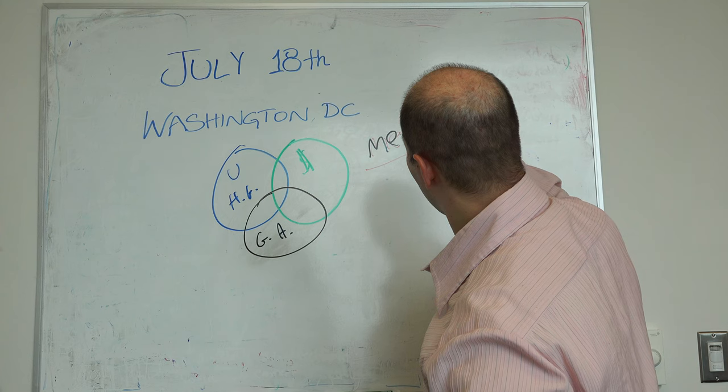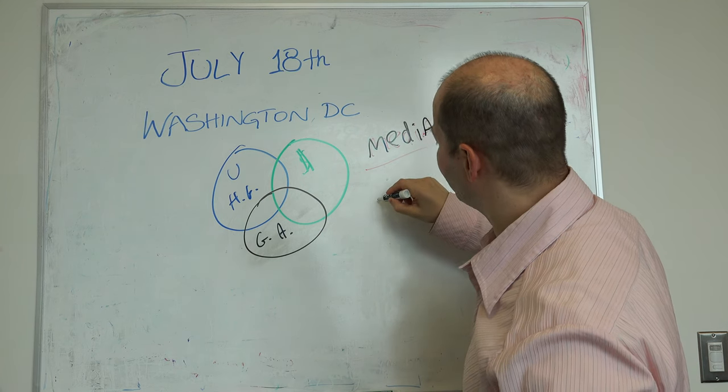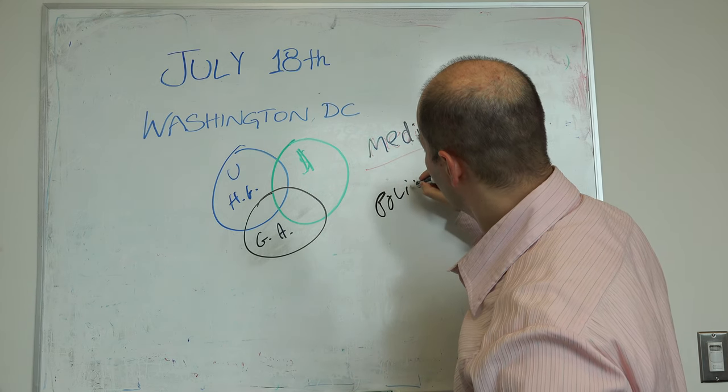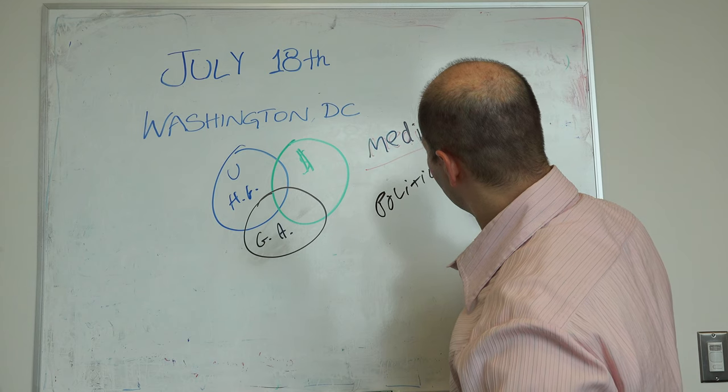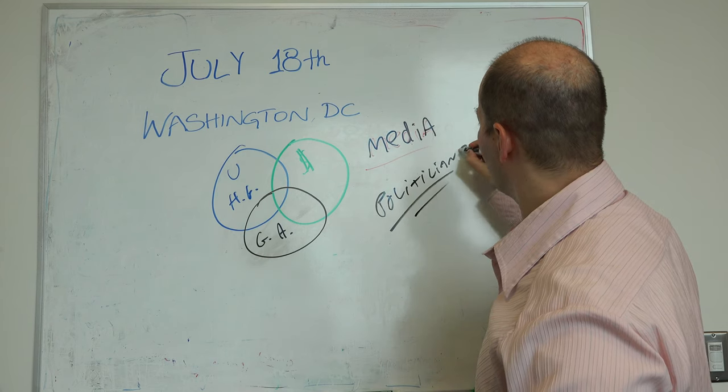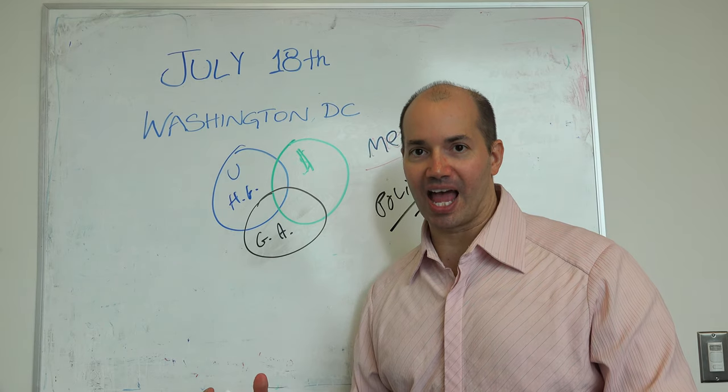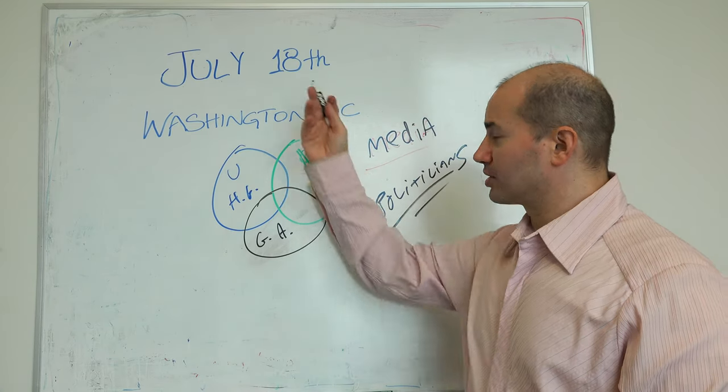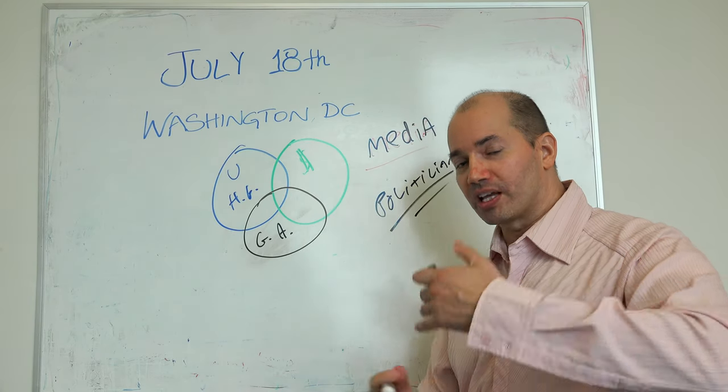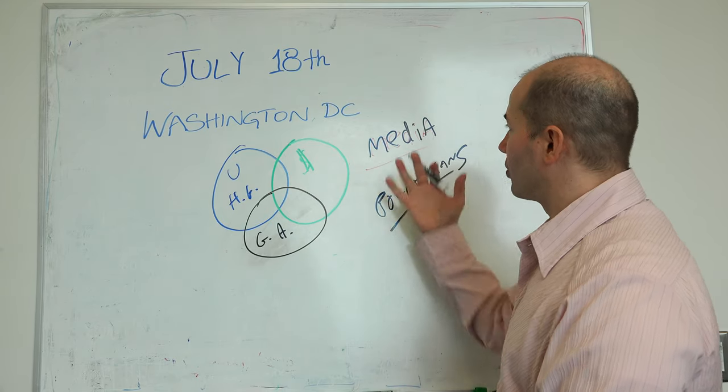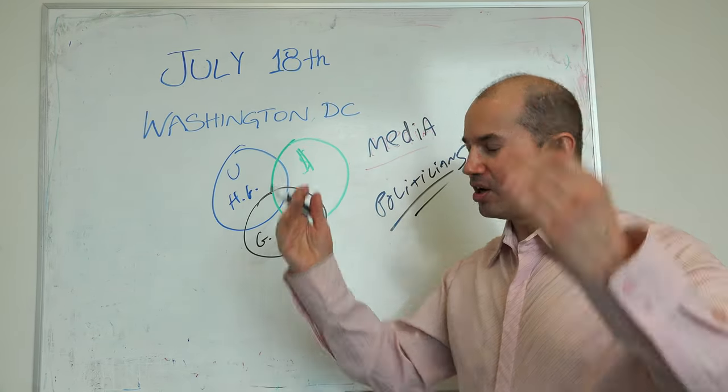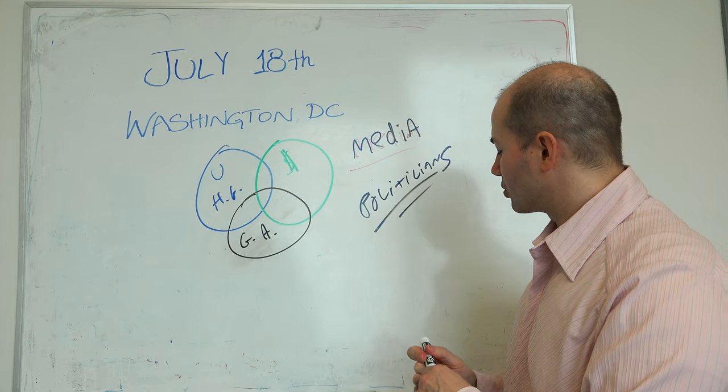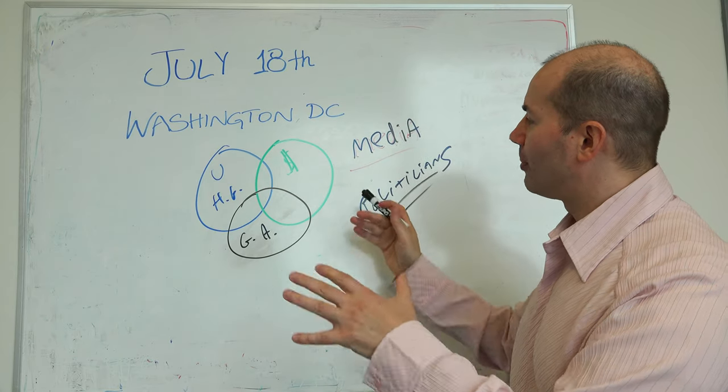And we actually also have politicians, which as we know are sort of the ultimate policymakers. At the end of the day, Congress is going to pass the law, so it moves beyond agencies. And of course you have the executive under the presidency that's also going to have impact on policy.